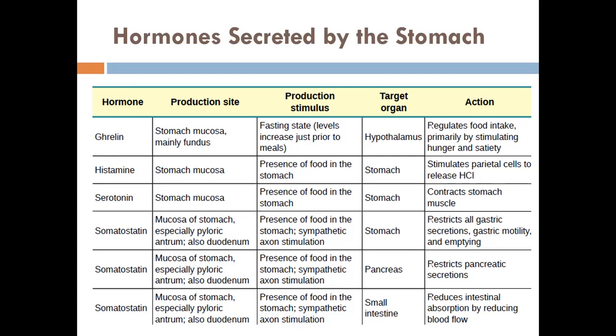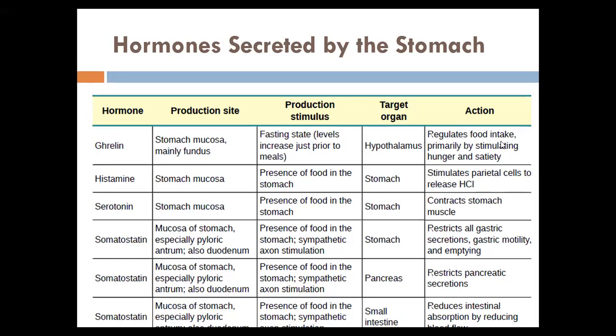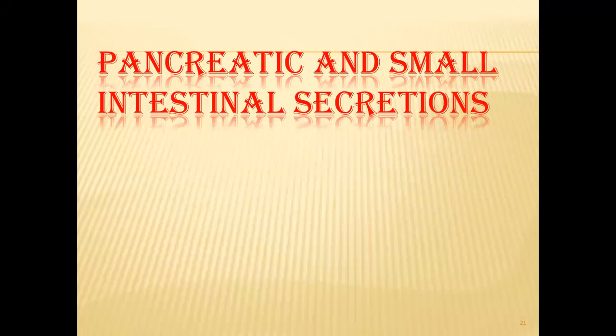Somatostatin is produced by D cells in the stomach, especially in the antrum and duodenum. The stimulus is the presence of food in the stomach and sympathetic stimulation. Somatostatin restricts all gastric secretions and motility, reducing them. It also restricts pancreatic secretions, reduces intestinal absorption and motility in the small intestines. Remember, somatostatin is inhibitory in function. Those are the secretions coming from the stomach.